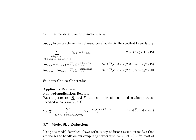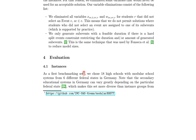To address model size reductions, the authors eliminate variables that would never be used for an acceptable solution. Specifically, they eliminate variables XSE_T_R and WSE_R for students that did not select an event, meaning students who did not select an event are not assigned to one of its sub-events. Furthermore, the authors only generate sub-events with a feasible duration if there is a hard split events constraint restricting the duration and/or amount of generated sub-events, similar to the technique used by Fonseca et al. to reduce model sizes.